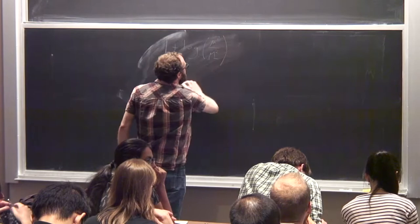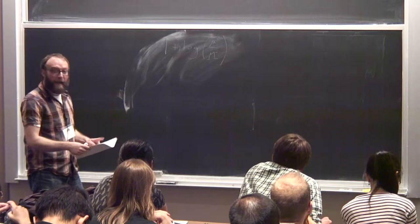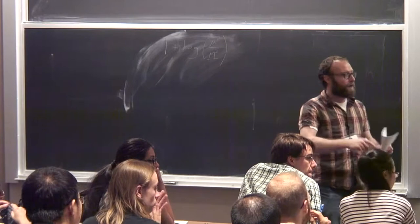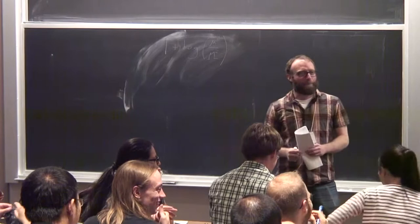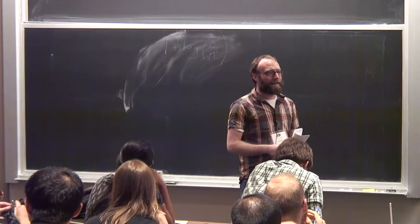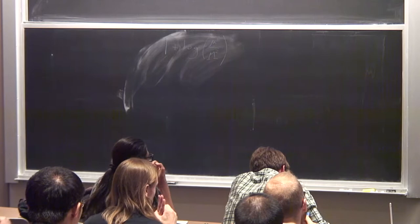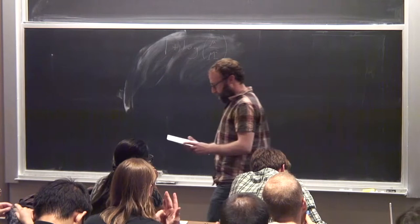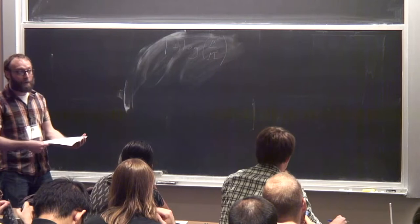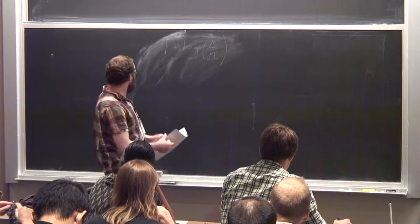Any questions or comments, especially related to the first part of last lecture? The matching procedure we used last time at one loop to calculate the threshold correction to the mass, we're going to do that again today in a different context. A lot of the framing is going to look very familiar, and then you'll see some cool stuff happen.